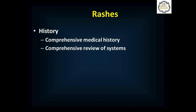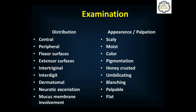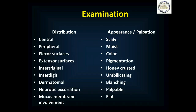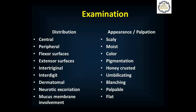Once you've done your rash history, get a comprehensive medical history to see if they have any other underlying medical illnesses and a comprehensive review of systems to make sure you're not missing any associated symptoms. When you examine them, you want to know where the rash is and what it looks like. Is it in their core — over their chest, abdomen, and back — that would be central? Or is it on their extremities — that would be peripheral, including the face and the head? Is it on the flexor surfaces like the inside of the wrist, or the extensor surfaces like the outside of the elbow? Is it in skin folds — the intertriginous spaces where skin is contacting skin and it's warm and moist?